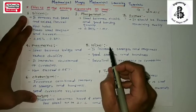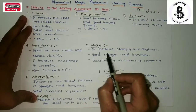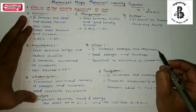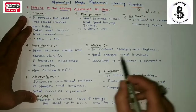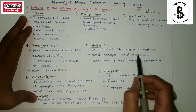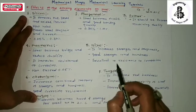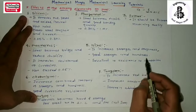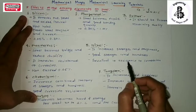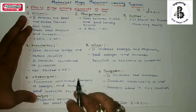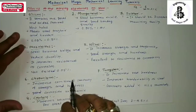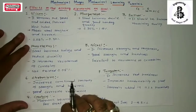Fifth element: nickel. Nickel increases the strength and toughness of materials, provides good strength and hardness, and offers excellent resistance to corrosion in most alloy steels.